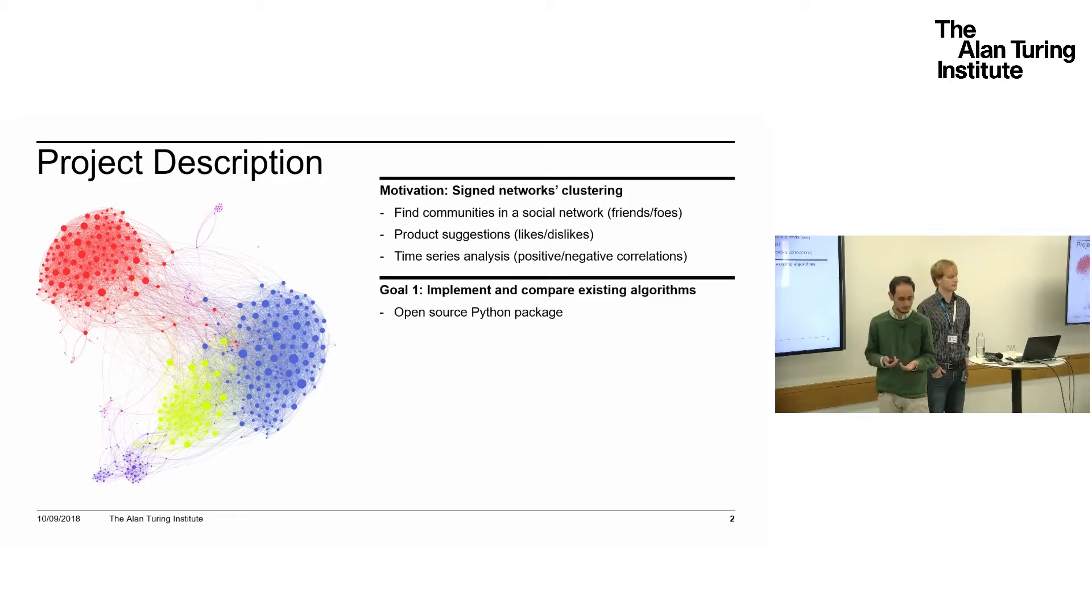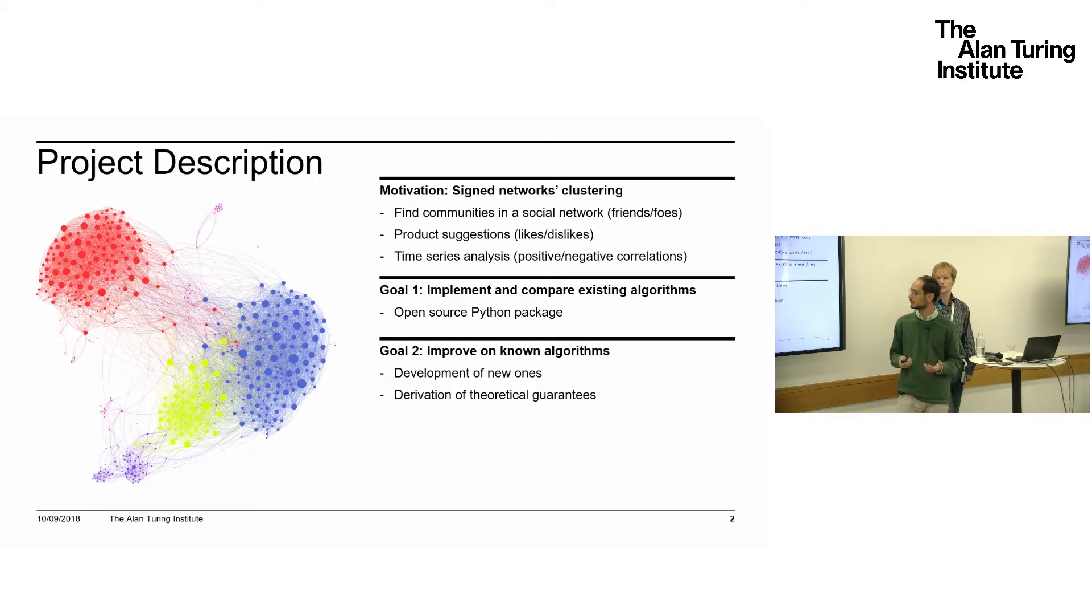The first was to write an open source Python package which implemented most of the existing algorithms on signed networks. This is important because these algorithms have been developed in the last 10 years—the interest in signed networks is quite recent—and there hasn't been a study on how these performed against each other on a wide range of situations. Then we wanted to develop new algorithms that can perform better in particular settings.